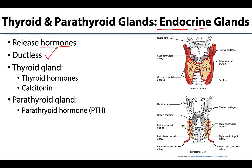The thyroid gland will release thyroid hormone, which will help control rates of tissue metabolism and will be needed in adequate amounts for protein synthesis. Additionally, it will release calcitonin if blood calcium levels get too high, leading to a decrease in blood calcium levels. Parathyroid hormone, released by the parathyroid glands, will kind of do the opposite of calcitonin, leading to increases in blood calcium levels.